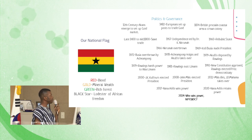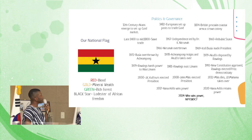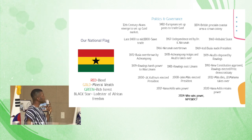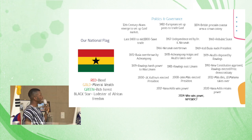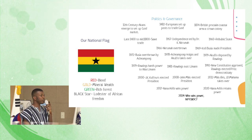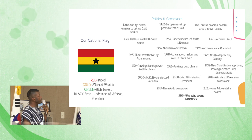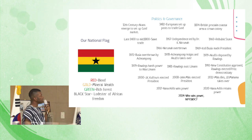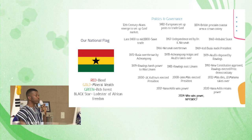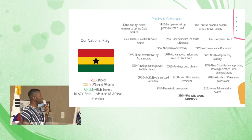In 1992 we elected Flight Lieutenant Jerry John Rawlings as our president. In 2000, we elected John Agyekum Kufuor. In 2008, we had President Atta Mills. Unfortunately he died in 2012, so the vice, John Dramani Mahama, took over. In 2017, Nana Akufo-Addo became president, and in 2020 he was retained. He is still our current president. Our next election will be held in 2024.